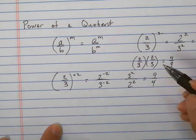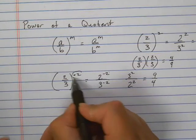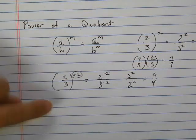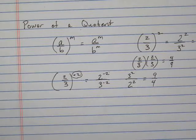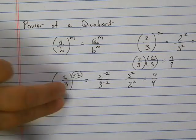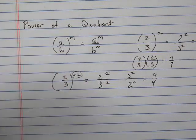So kind of a shortcut is this. If you have a negative exponent and you have a fraction inside, you can do the reciprocal. You can take the numerator to the denominator and the denominator to the numerator.